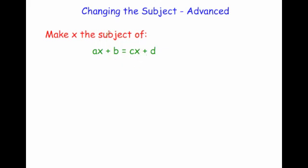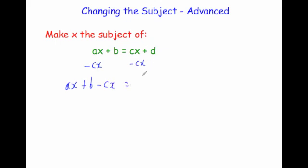Making x the subject means we want to bring all the x's to one side and everything else to the other side, then get x on its own. We've got ax plus b and cx plus d. Let's bring all the x's to the left hand side, so let's get rid of cx by taking away cx from both sides. The left hand side becomes ax plus b minus cx, and the right hand side becomes just d.